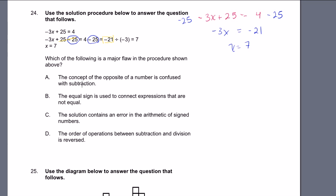So let's see what the choices are. The concept of the opposite number is confused with subtraction - no, not really. The equal sign is used to connect expressions that are not equal. That sounds about right. Because this expression and this are equal. We got minus 3x plus 25 minus 25, which is just minus 3x. That does indeed equal 4 minus 25 or minus 21. But that does not equal minus 21 divided by minus 3. So this looks like my answer.